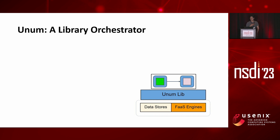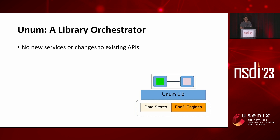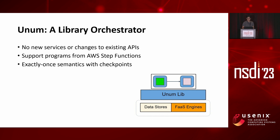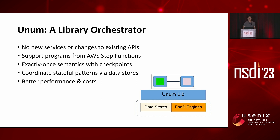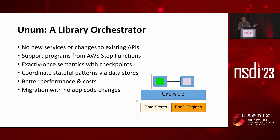To this purpose, we designed an application-level orchestration system which we call Unum. Unum is built on the basic serverless abstraction, requiring no new services or changes to existing APIs. Unum supports the same higher-level programming interface, ensures exactly-once execution semantics, supports stateful patterns, but at the same time is more programmable, cheaper to use, and performs better in most scenarios. Unum applications are easily portable — we implemented Unum on both Google Cloud and AWS, and applications can migrate from one to another without any code changes.